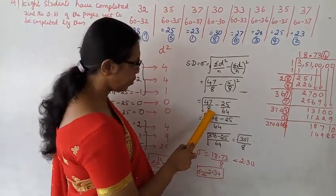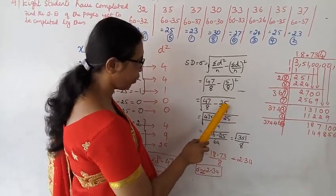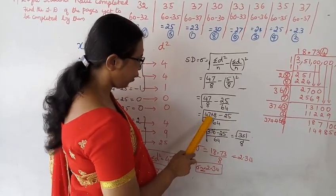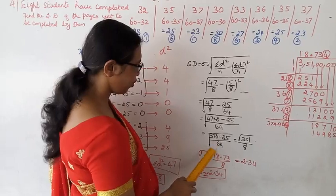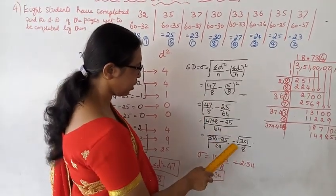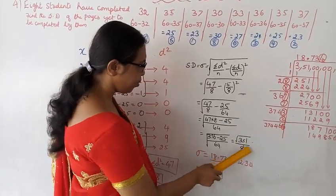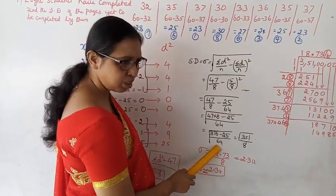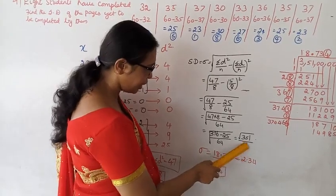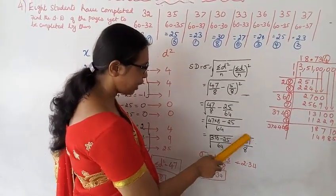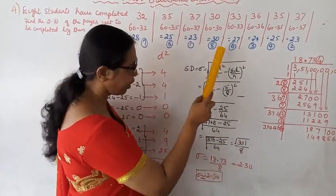Converting to a common denominator: 47 by 8 equals 376 by 64. So sigma = root of 376 by 64 minus 25 by 64 = root of 351 by 64. The denominator root of 64 equals 8. So sigma = root of 351 divided by 8.